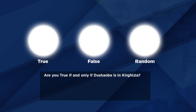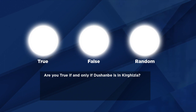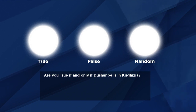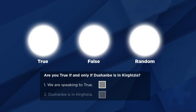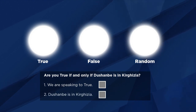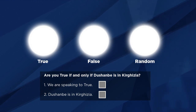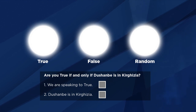Here's the solution. We can ask the question: 'Are you True if and only if Dushanbe is in Kyrgyzia?' Now, this question involves a biconditional statement. Its two parts are: one, we are speaking to True, and two, Dushanbe is in Kyrgyzia. If these two statements have the same truth value — both true or both false — then the true answer to the question is yes, and the false answer to the question is no.